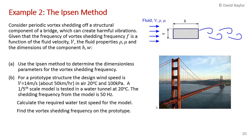Moving on to Example 2 of the Ipsen method: we consider periodic vortex shedding off a structural component of a bridge — a rectangular bar in two-dimensional flow with regular vortex shedding. Given that the vortex shedding frequency is a function of fluid velocity, fluid properties, and the dimensions of the component (height and width), we want to use the Ipsen method to determine the dimensionless parameters that characterize the vortex shedding frequency.